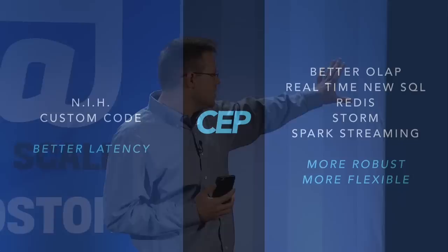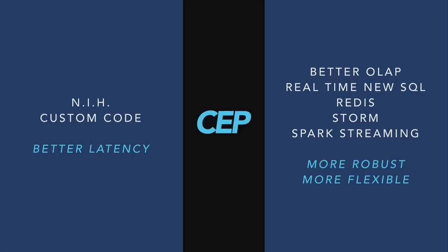On one side, algorithmic traders looking for double-digit microseconds of latency do their own thing — they write custom code. On the other hand, systems like Vertica do a lot of this analysis faster than they used to. Systems like VoltDB, Redis, Storm, and Spark Streaming are not necessarily as low-latency as CEP systems, but they're much more flexible and robust. So the window for CEP is getting smaller.